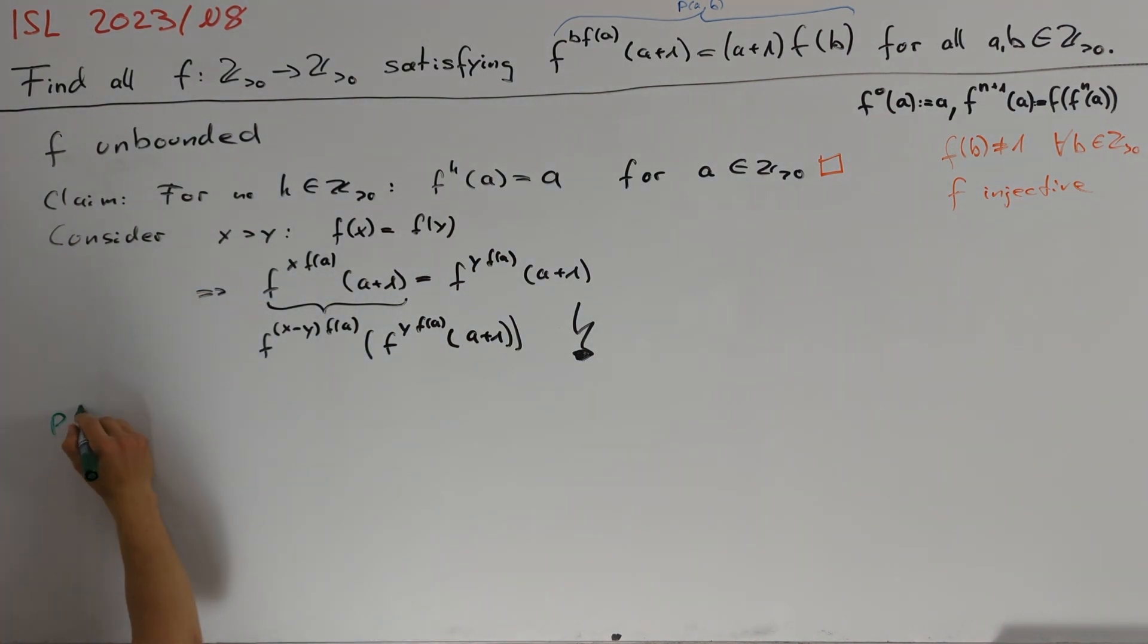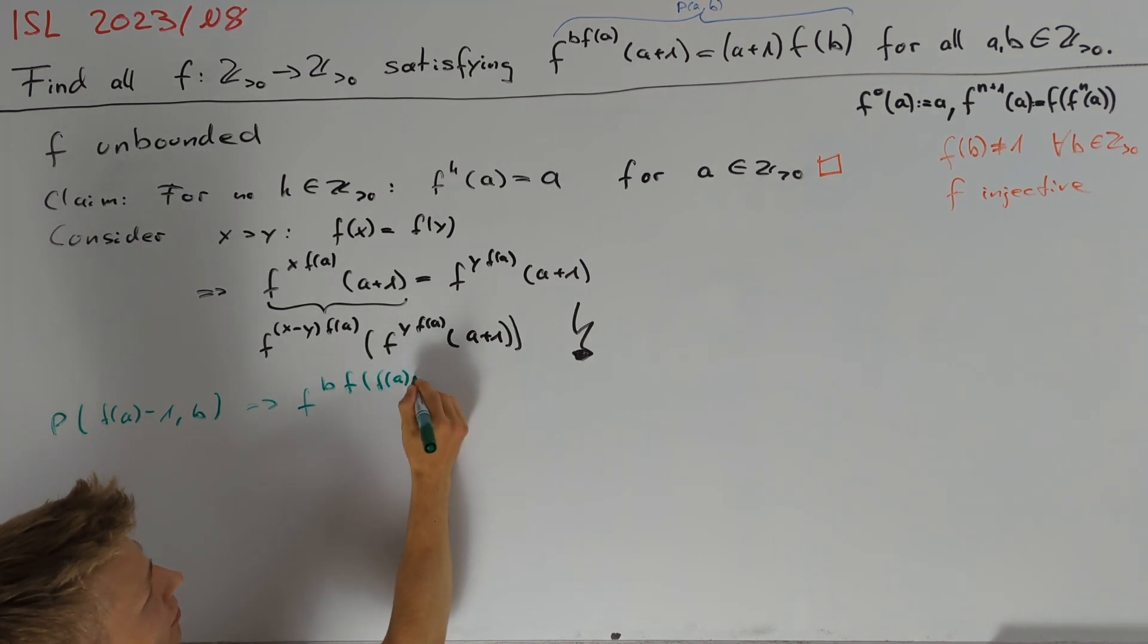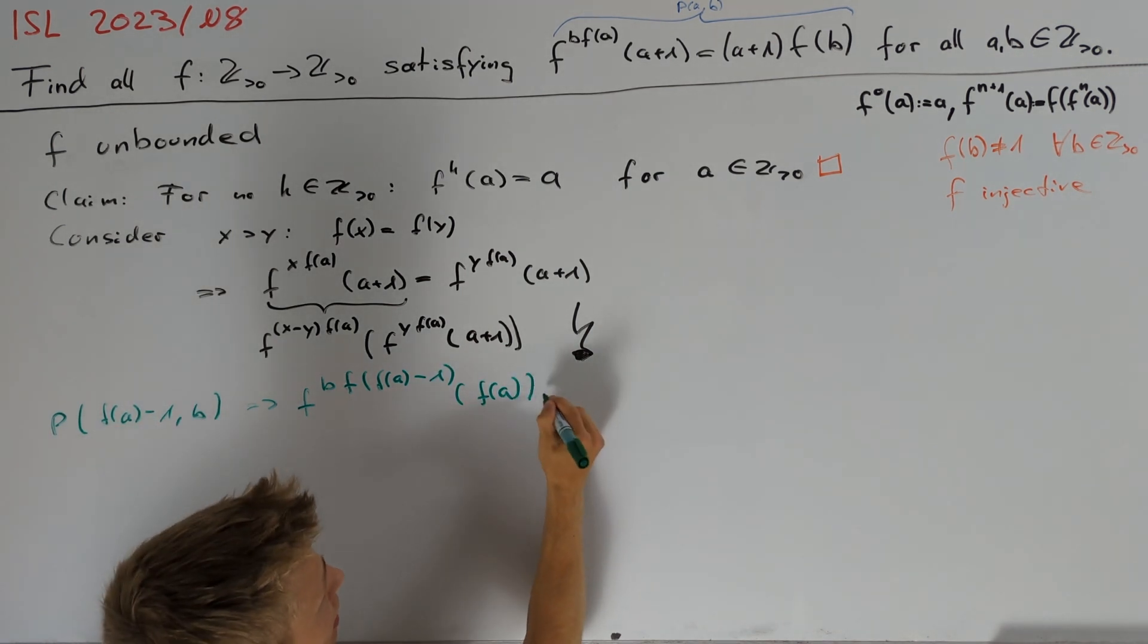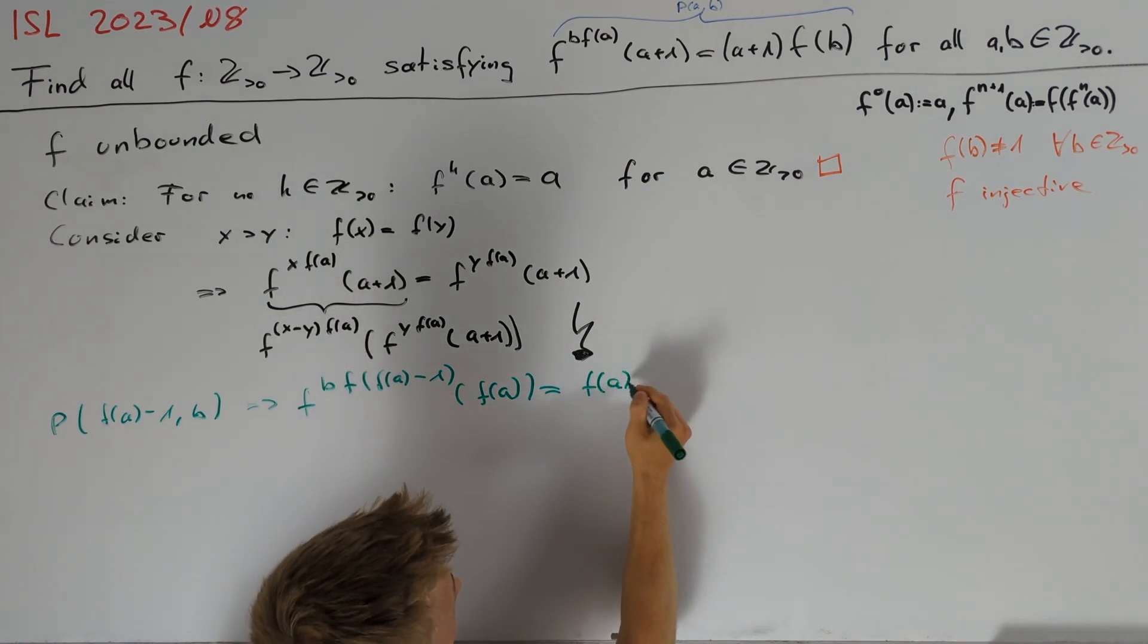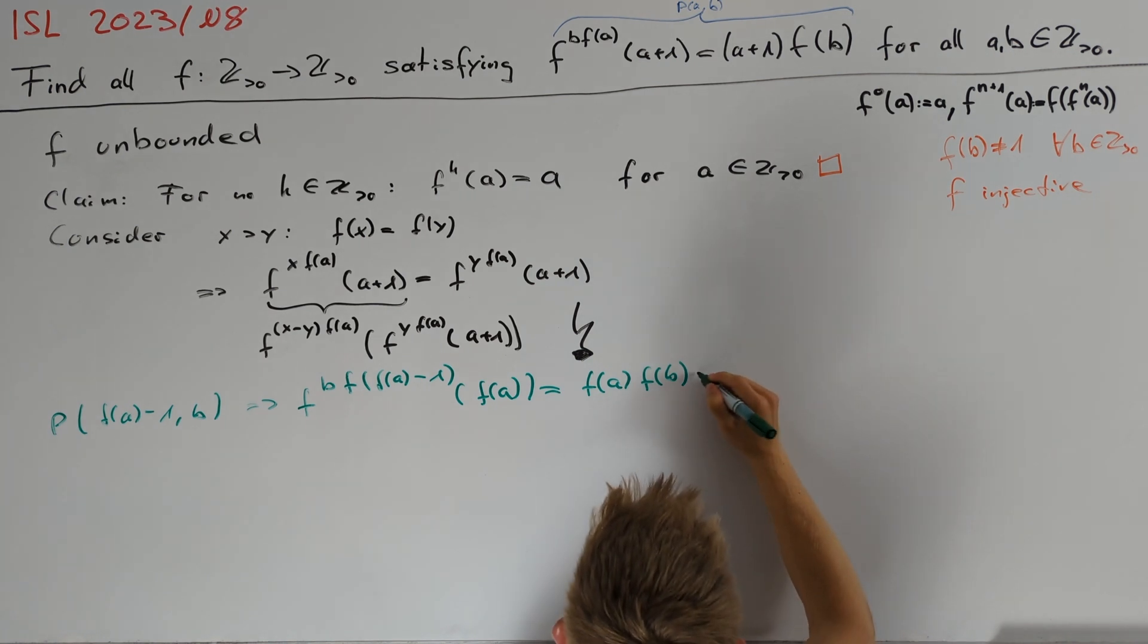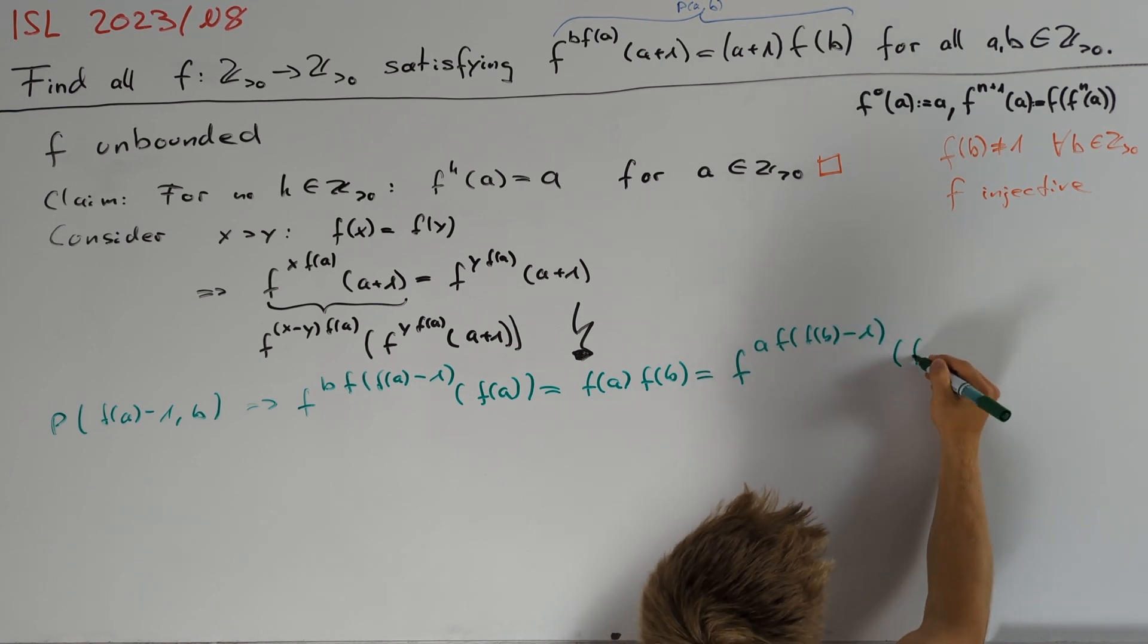The easiest way of doing this is to get the right hand side symmetric in a and b. We, therefore, want to consider P(f(a)-1, b). And here, I want to make a short note that this is no problem because we know that f(a) is greater than 1. This implies that f^(bf(f(a)-1))(f(a)) = f(a) times f(b). And now, by switching a and b, we also get that this is equal to f^(af(f(b)-1))(f(b)).